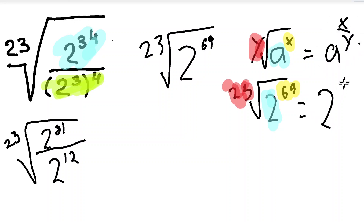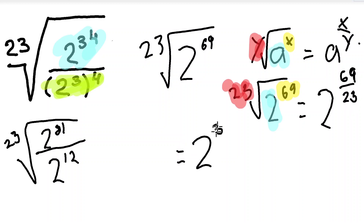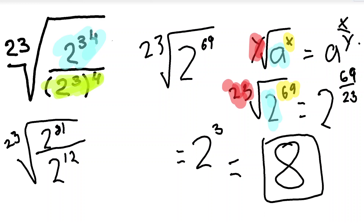We get 2 to the power of 69 over 23. This fraction is simplifiable — 69 divided by 23 is 3. So we have 2 to the power of 3, and 2 times 2 times 2 equals 8. That's our final answer. Thank you for watching and I hope you enjoyed this video.